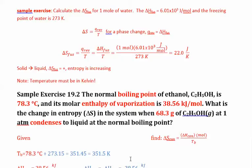Let's calculate the entropy of fusion for one mole of water. Delta S is entropy and delta H is enthalpy. They give us the enthalpy of fusion and the freezing point of water. Remember — at zero degrees Celsius, we need to put temperature in Kelvin. The formula is: delta S equals Q_reversible over T, which for a phase change equals delta H over T. This only works for isothermal processes.